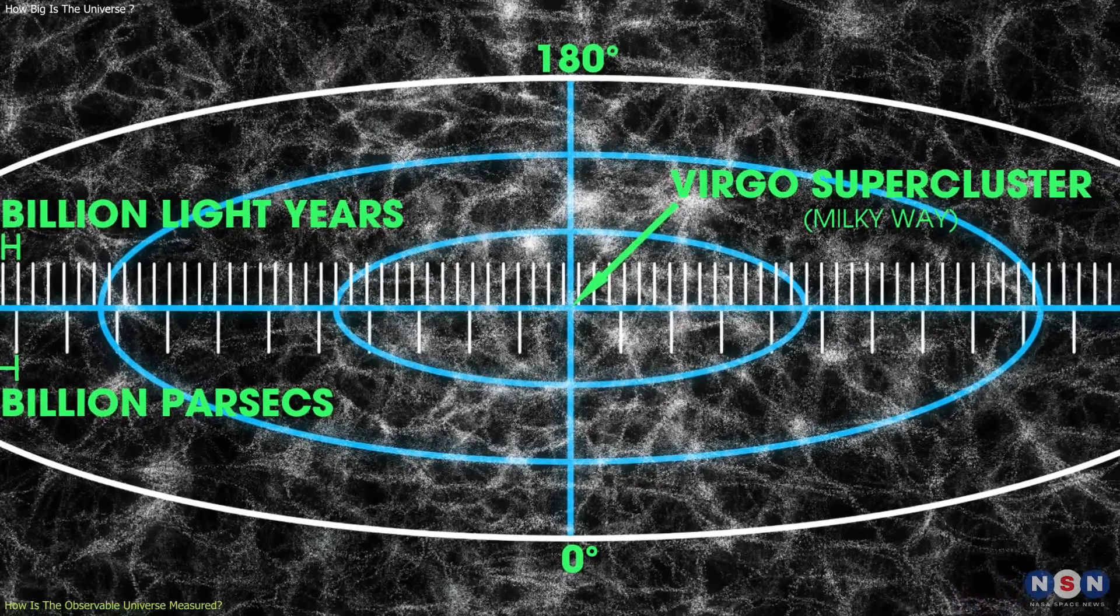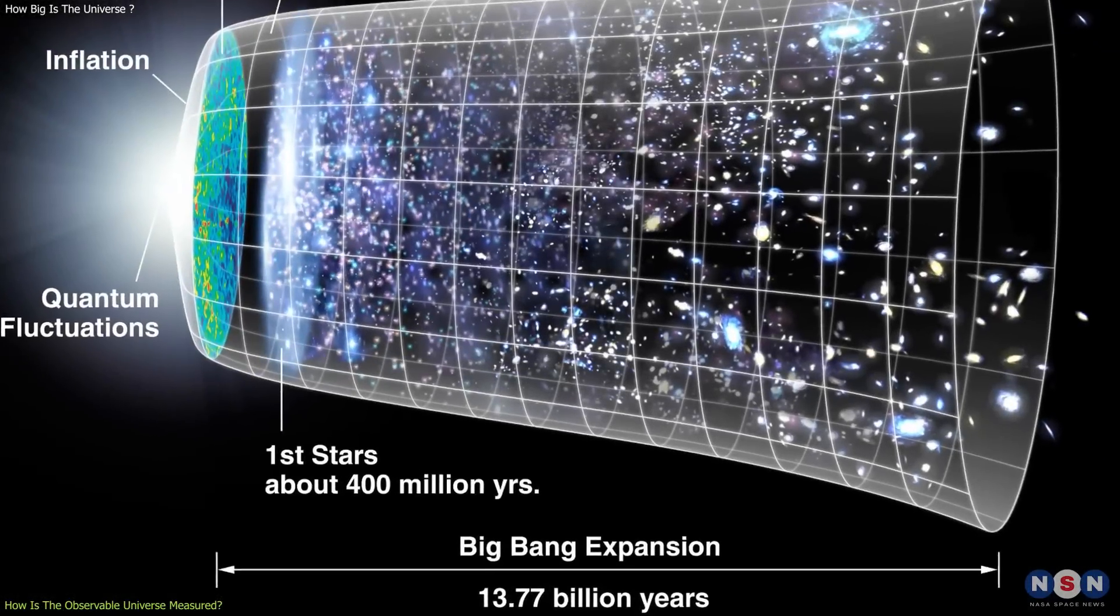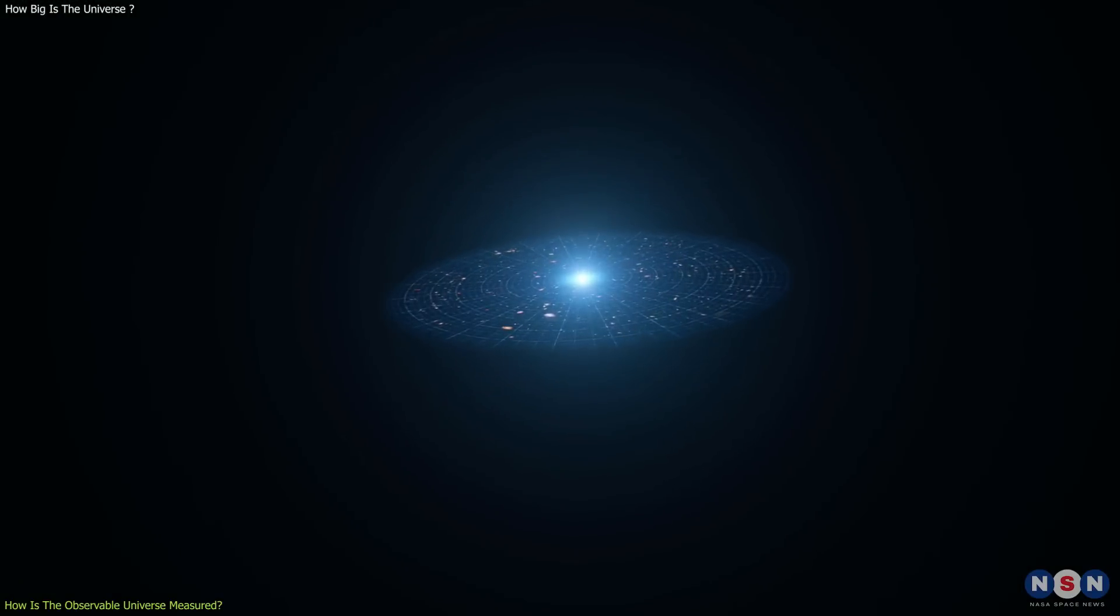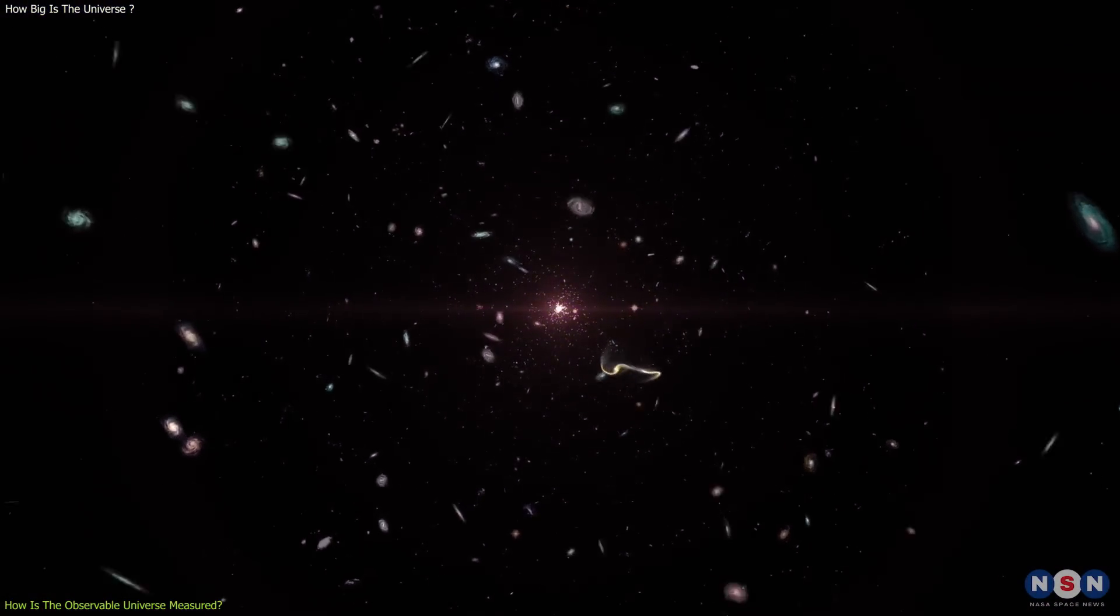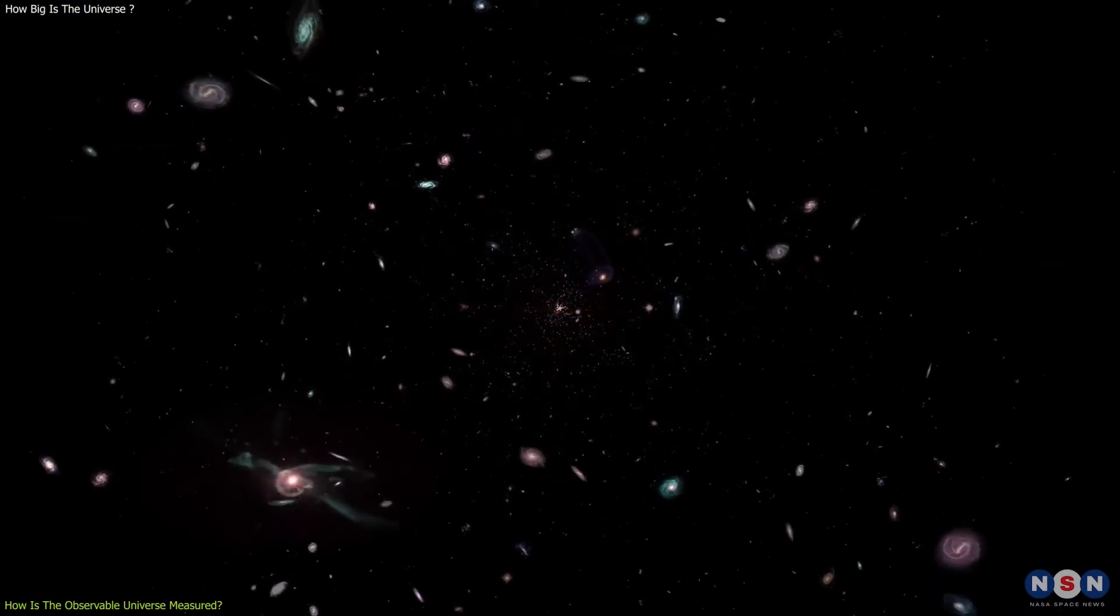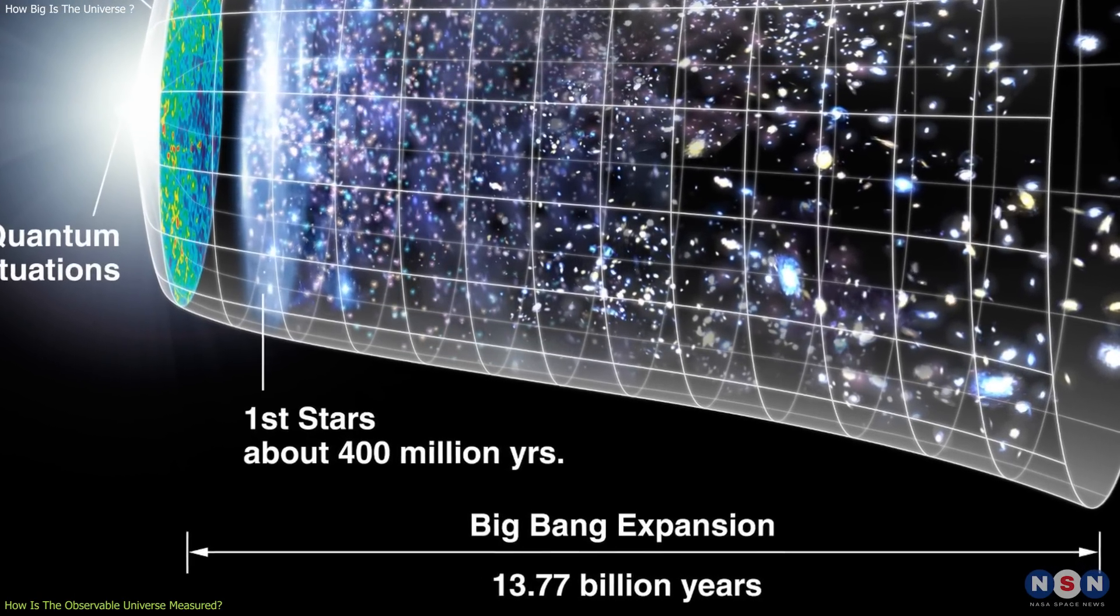To measure the radius of the observable universe, we need to know two things. The age of the universe, and the rate of the universe's expansion. The age of the universe is the time that has passed since the Big Bang, and it is estimated to be about 13.8 billion years, based on the measurements of the CMB and other cosmological observations.